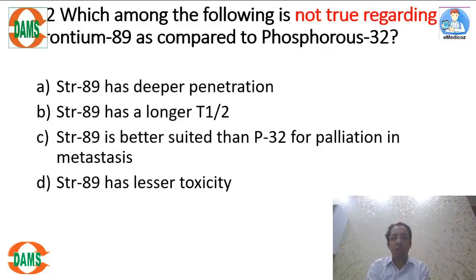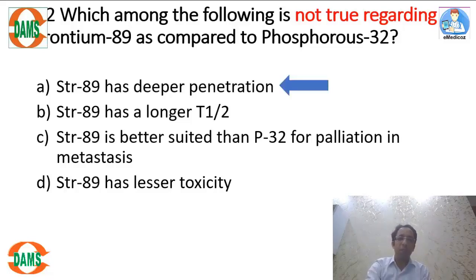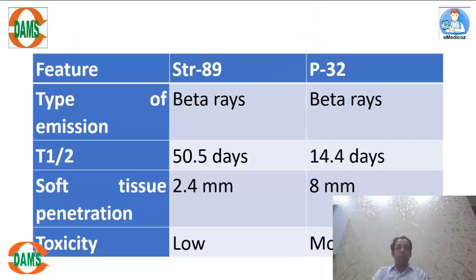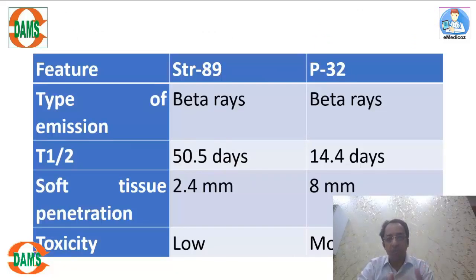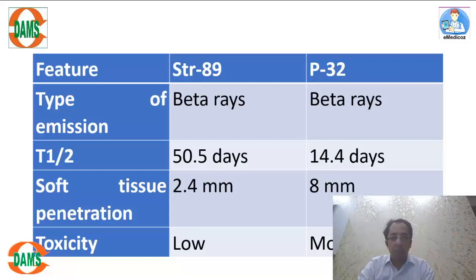In the next question, the keyword is 'not true regarding strontium as compared to phosphorus.' We have to find the wrong statement. Both strontium and phosphorus are used for palliative treatment of painful bone metastasis. Both are beta emitters, but strontium has a longer half-life of around 50 days.